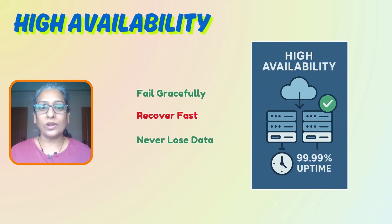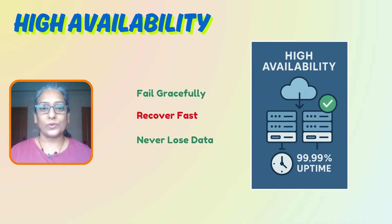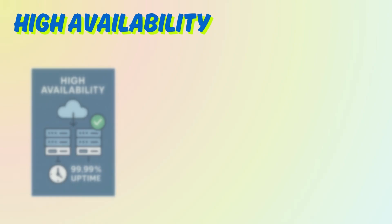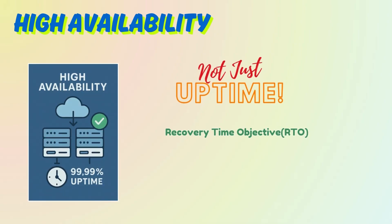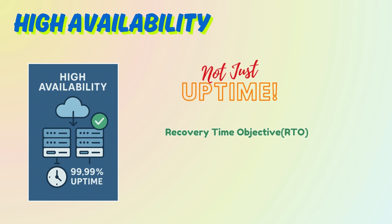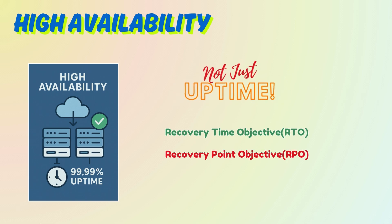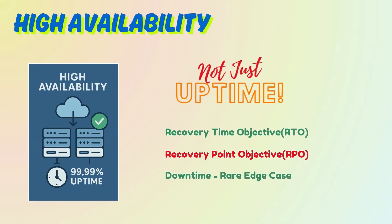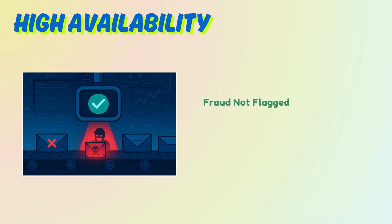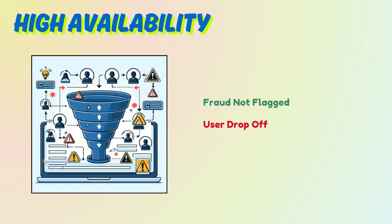That is what we call high availability, and that is what we are building today. High availability is not just about uptime — it's about how quickly you recover from failure, how much data you can afford to lose, and designing systems where downtime is a rare edge case. In real-time systems, even a few seconds delay can mean a fraud not getting plugged, a user dropping off, or millions of events piling up in your queues.